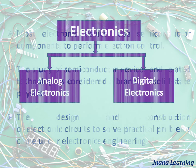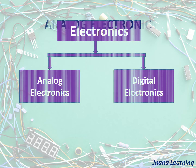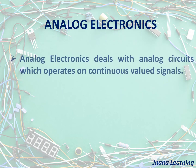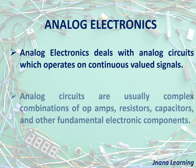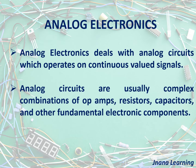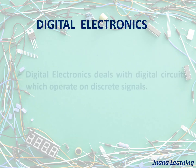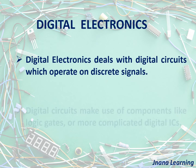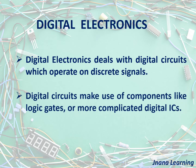The study of electronics can be classified into two types: analog electronics and digital electronics. Analog electronics deals with analog circuits which operate on continuous valued signals. Analog circuits are usually complex combinations of op-amps, resistors, capacitors, and other fundamental electronic components. Digital electronics deals with digital circuits which operate on discrete signals, making use of components like logic gates or more complicated digital ICs.